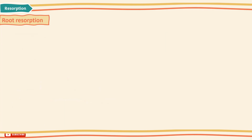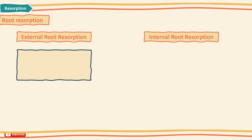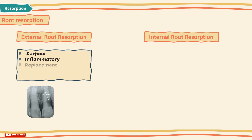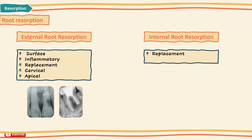Here are the main types of root resorption. External types include surface, inflammatory, replacement, cervical, and apical breakdown. Internal root resorption includes replacement and inflammatory subtypes.